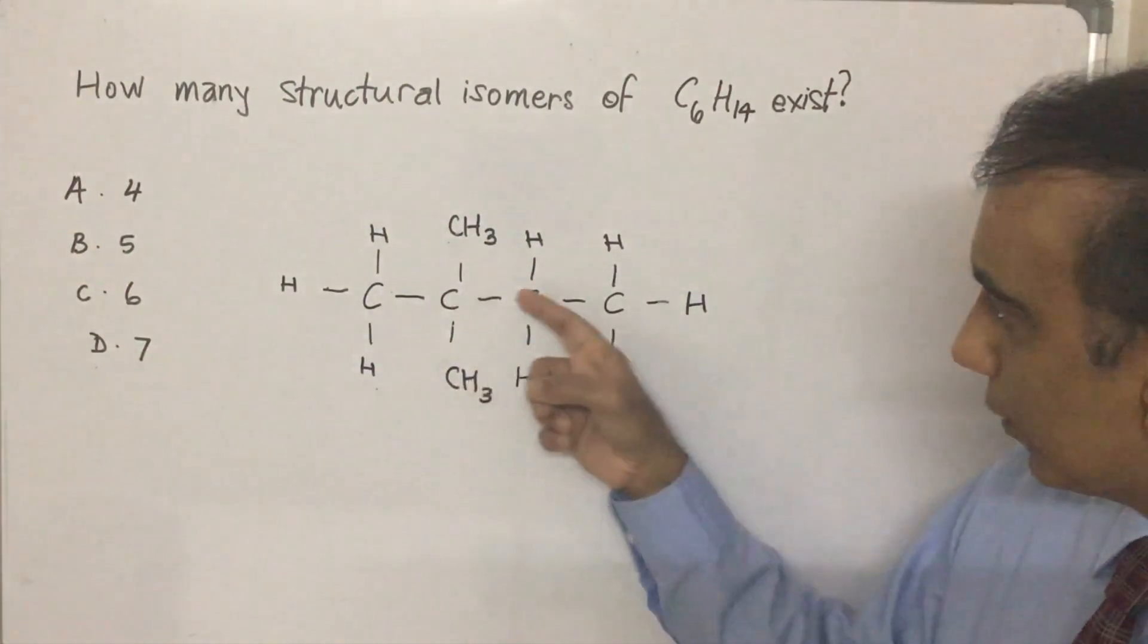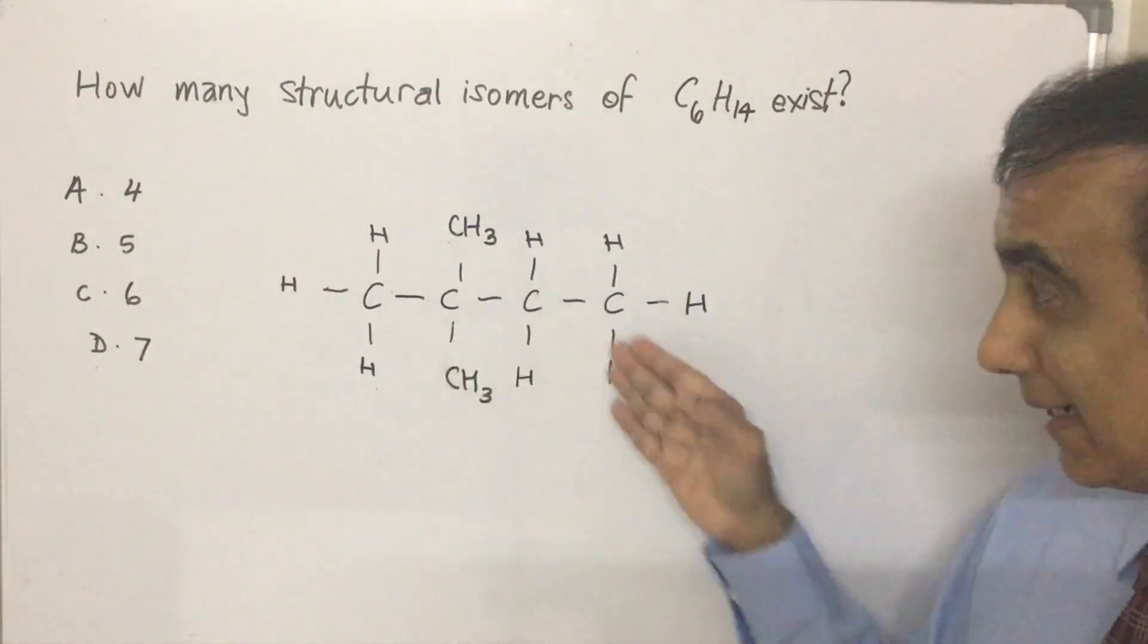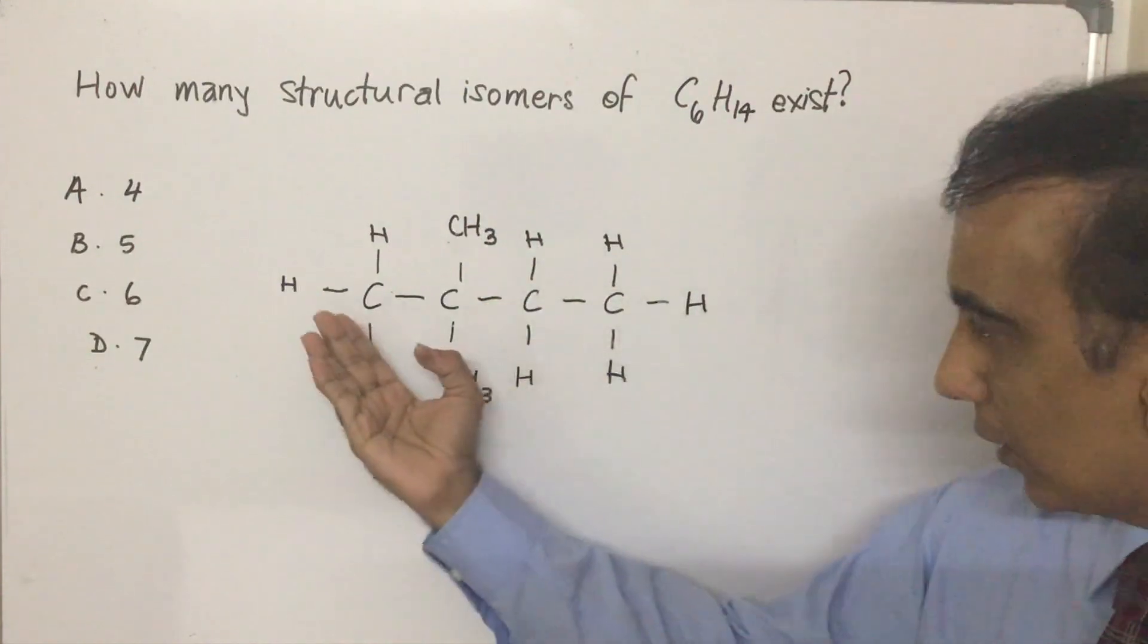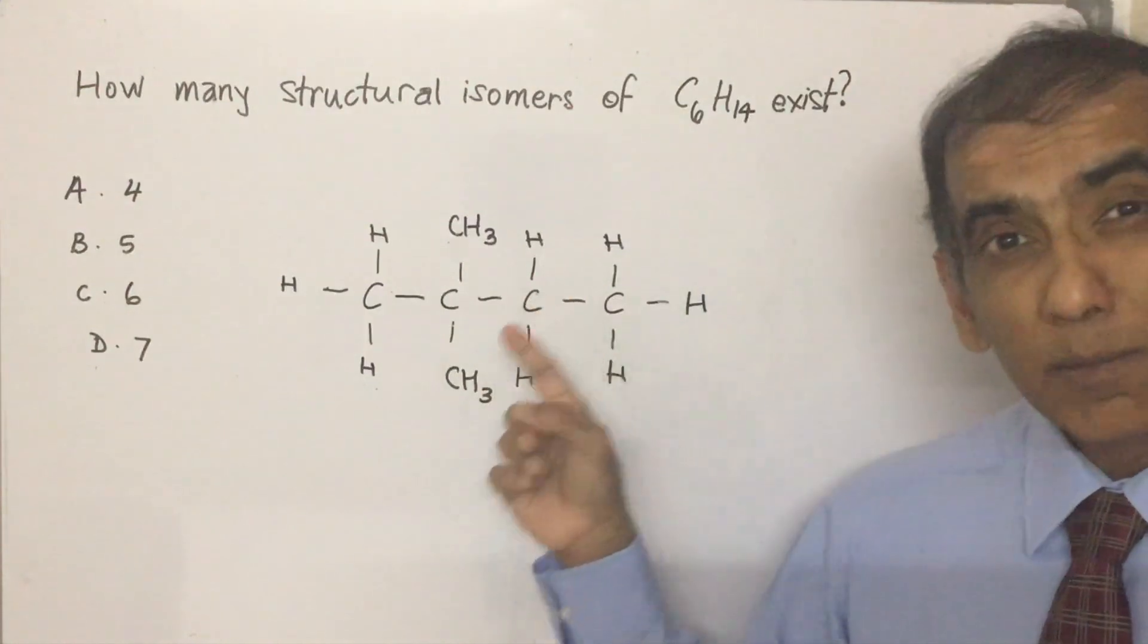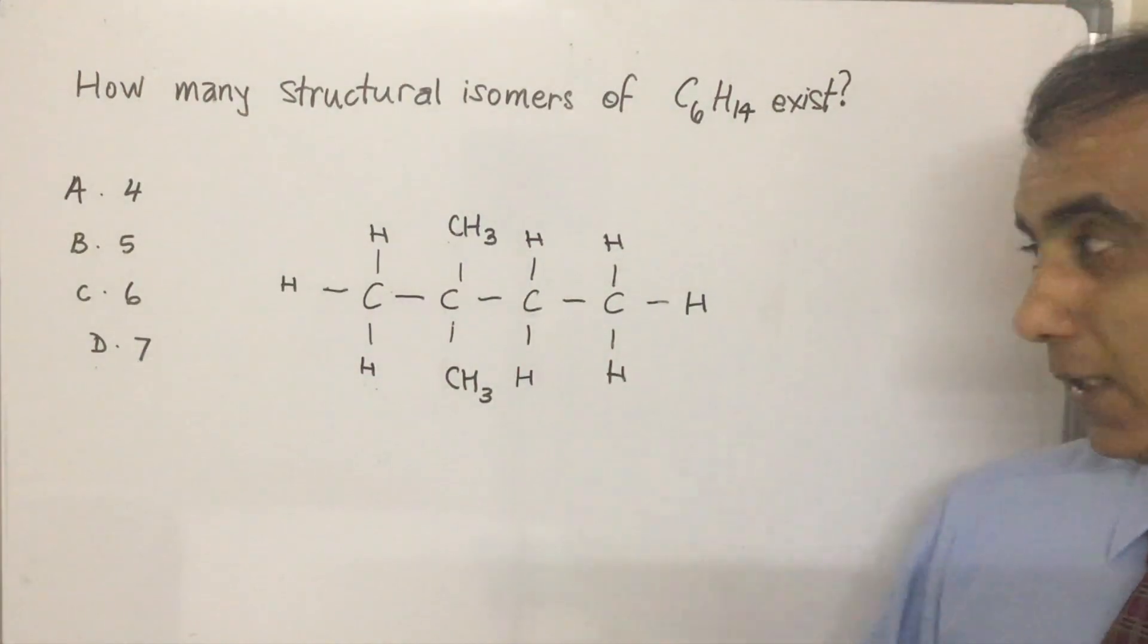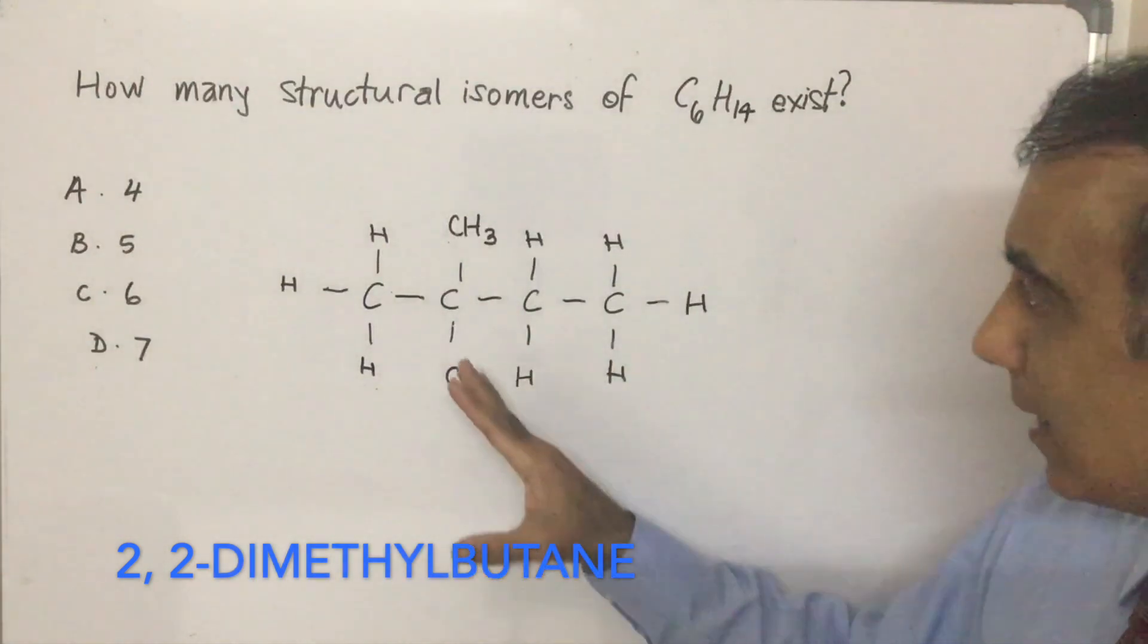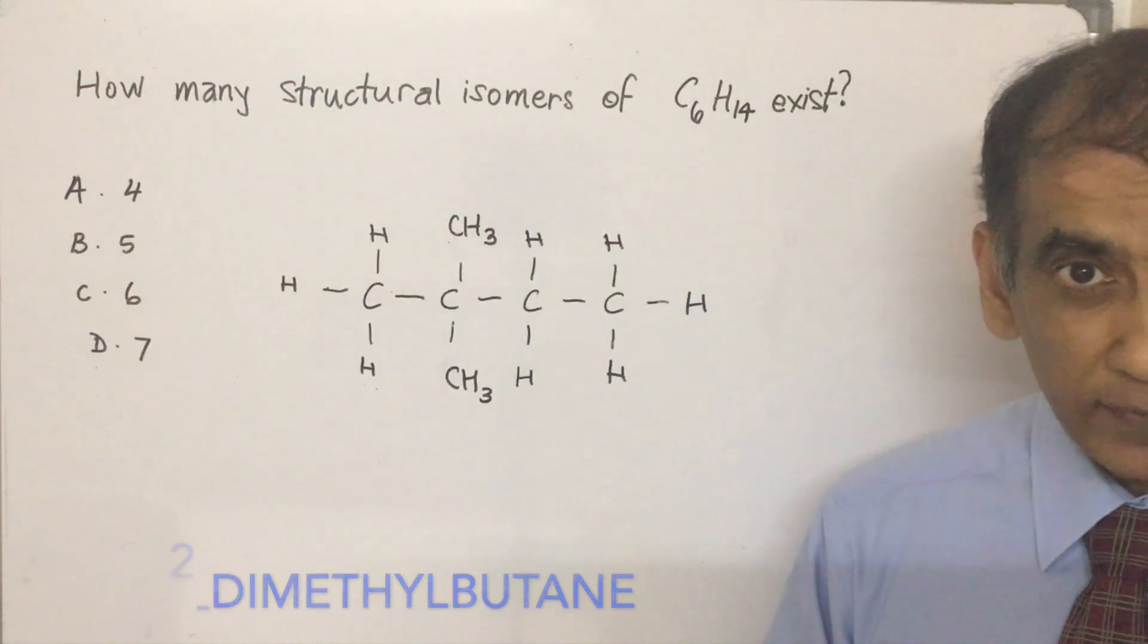It's the longest continuous chain that we're looking for. We can get 1, 2, 3, 4 this way as well. They all count as four carbons in the longest continuous chain that you can get. Now, whether we go this way, this way, or straight across, it's always going to be that this is carbon atom number two. Carbon atom number two contains two CH3 groups, giving the name of this structure as 2,2-dimethylbutane. That's the fourth isomer that we found.